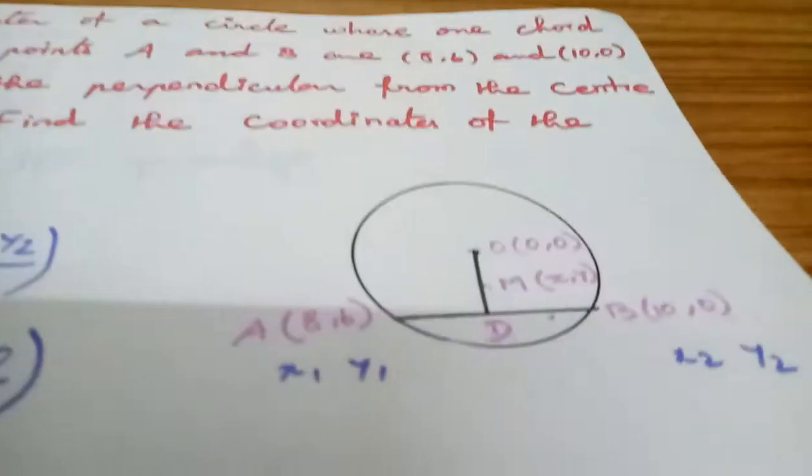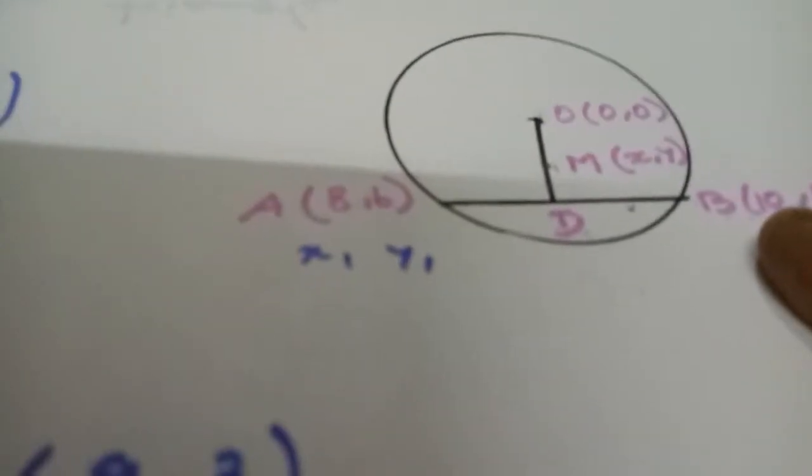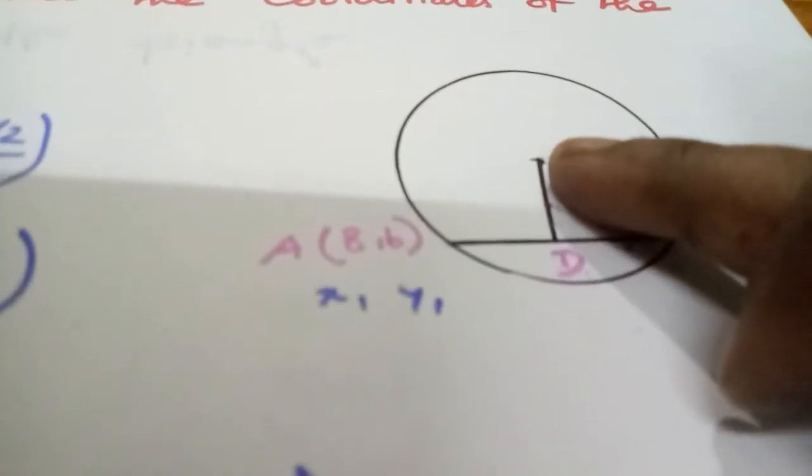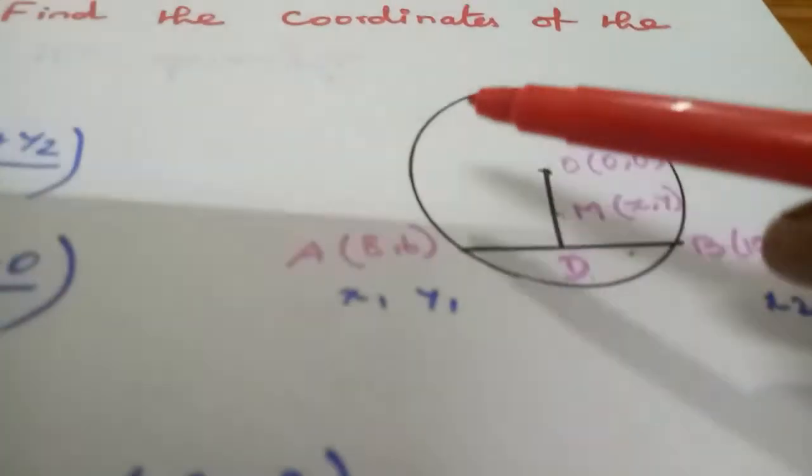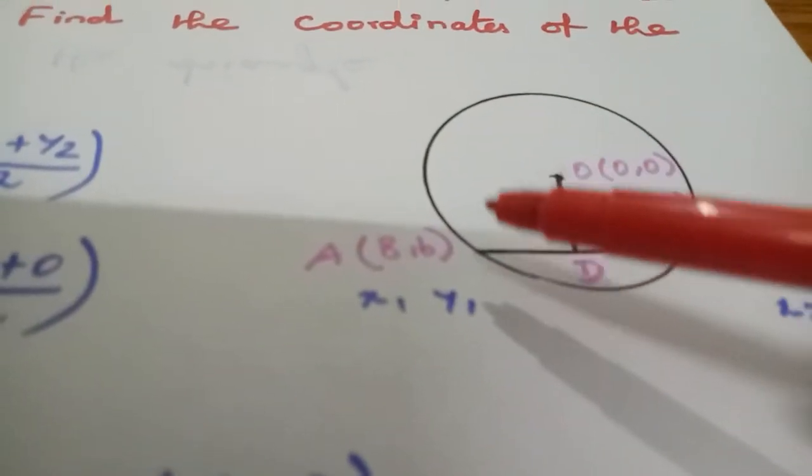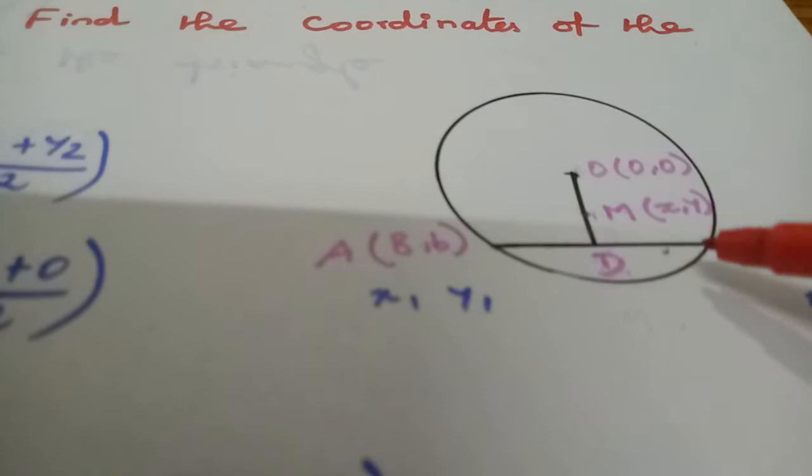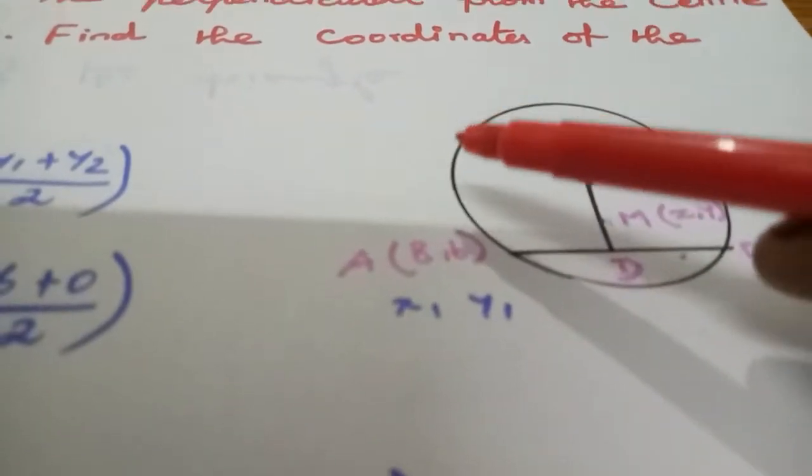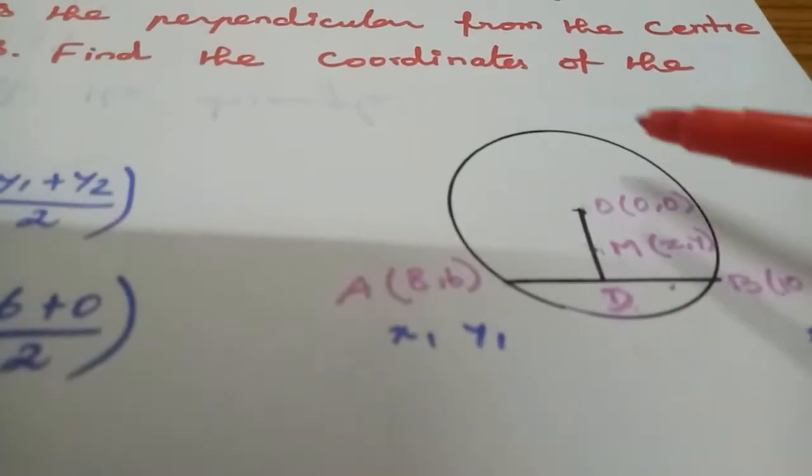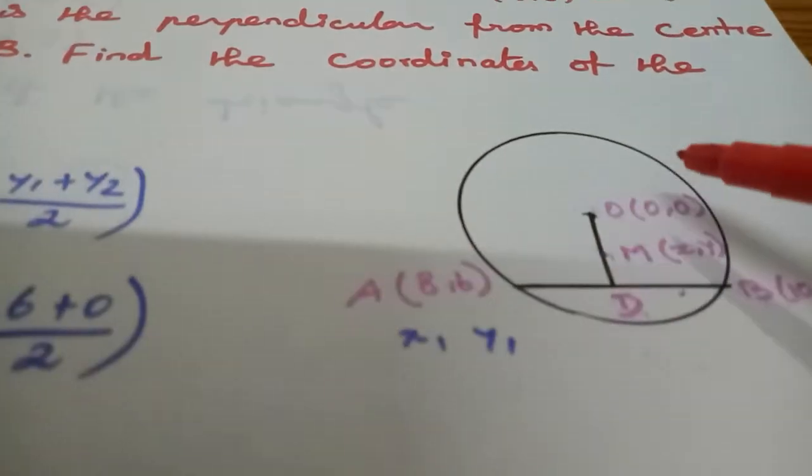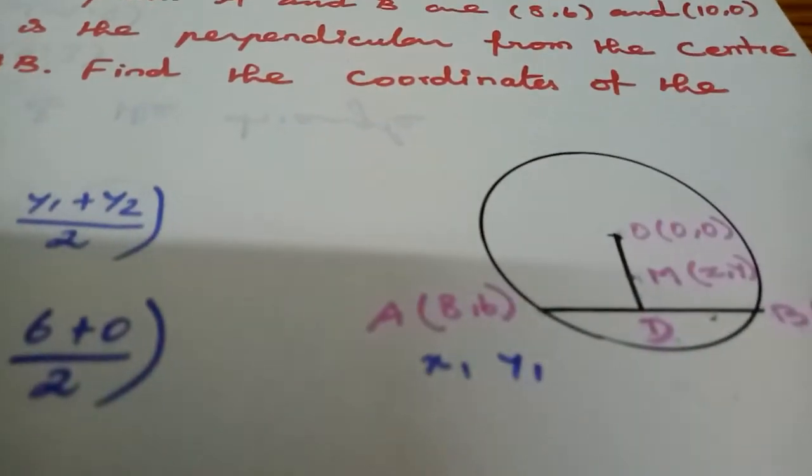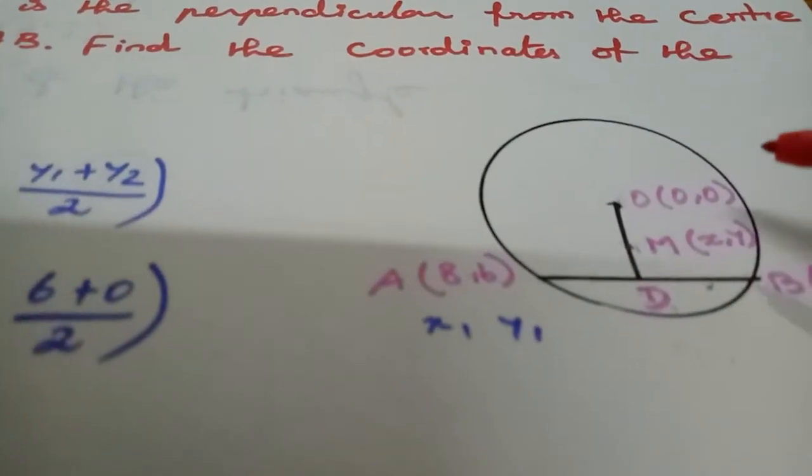Draw the diagram. A circle with a chord - a chord means two points joined by a line. If you have two points, you can join the line, that is a chord. The biggest chord is called diameter.